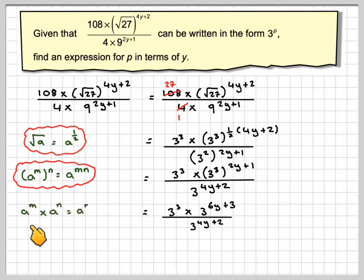Now this rule, a to the m times a to the n is a to the m plus n. That means I can now add that 3 to that 3 to make it 6. So we now get 3 to the 6y plus 6, that's the top there, applying that rule. We'll keep the bottom as 3 to the 4y plus 2.